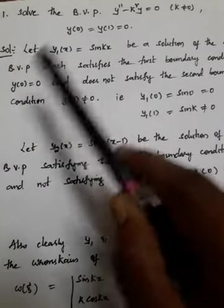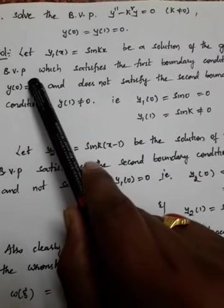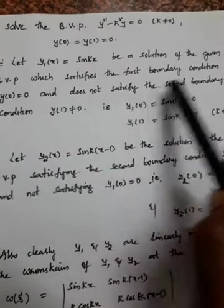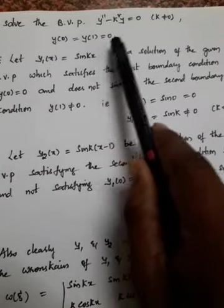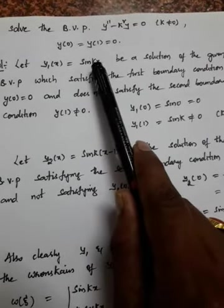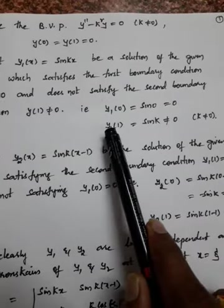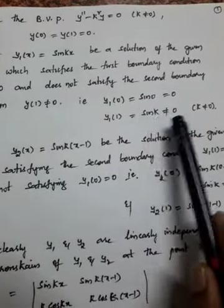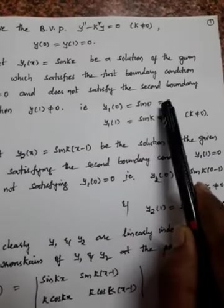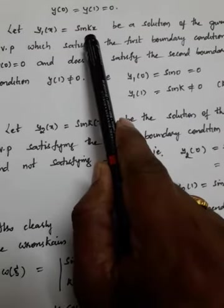Let y1(x) = sin(kx) be the solution of the given boundary value problem, which satisfies the first boundary condition y(0) = 0 and does not satisfy the second boundary condition y(1) = 0. That is, y1(0) = sin(k·0) = sin(0) = 0, so the first condition is satisfied. And y1(1) = sin(k), which may not be equal to 0 where k ≠ 0. So y1(x) = sin(kx) is correct.